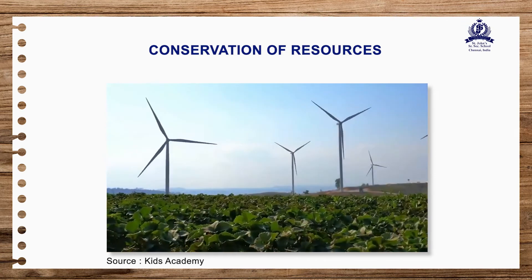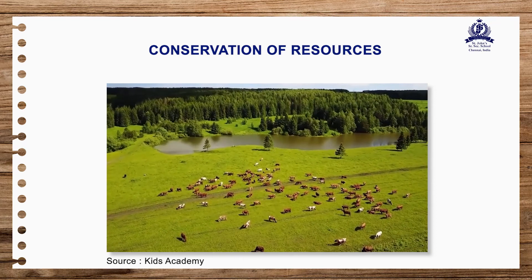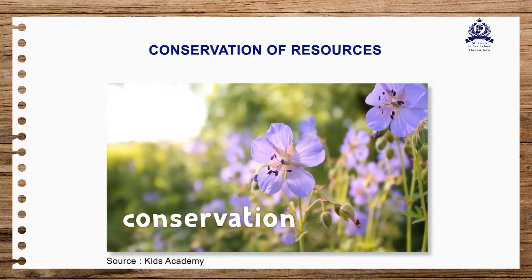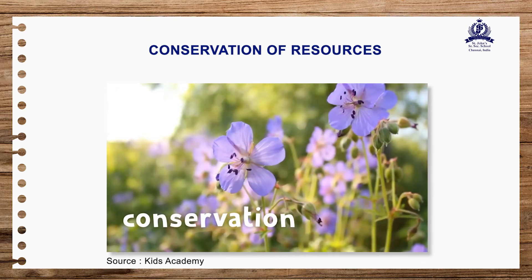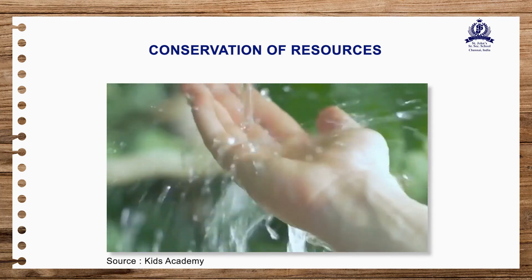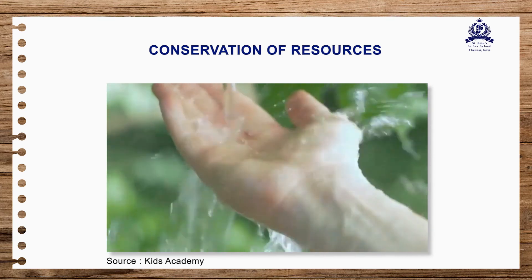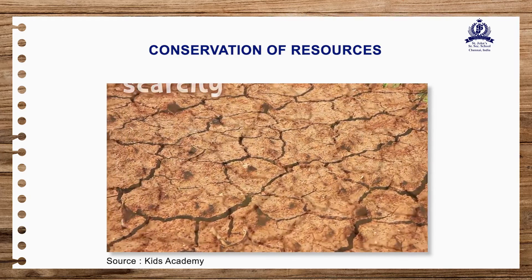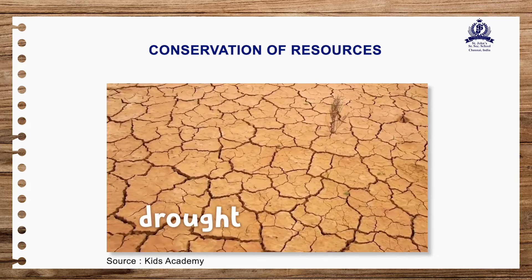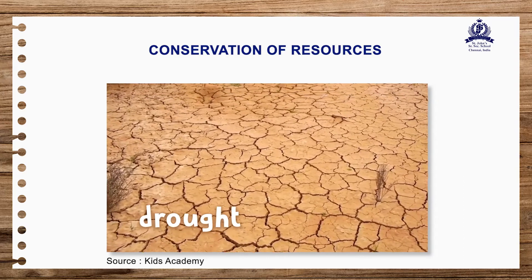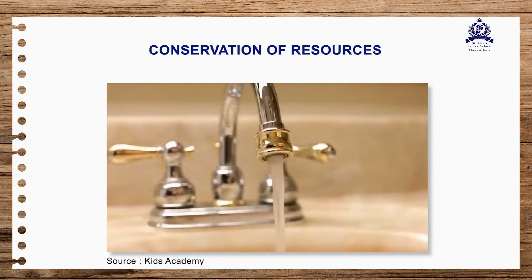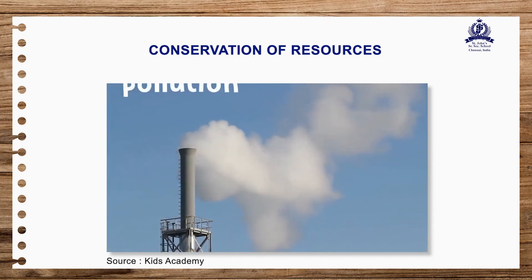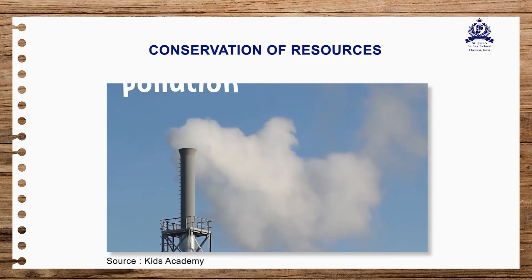Conservation of resources: in early times, the density of population was low and the needs of human beings were limited. They were dependent on plants and animals which were easily available in the environment, thus they never felt the need for conservation of resources. With scientific and technological progress, human beings started using resources at a much larger scale. The continuous rise in population also caused an increasing demand for resources. This created a situation where non-renewable resources could be exhausted. Therefore a balance between population growth and the utilization of resources is absolutely necessary. Using natural resources carefully without wasting them is called conservation of resources.